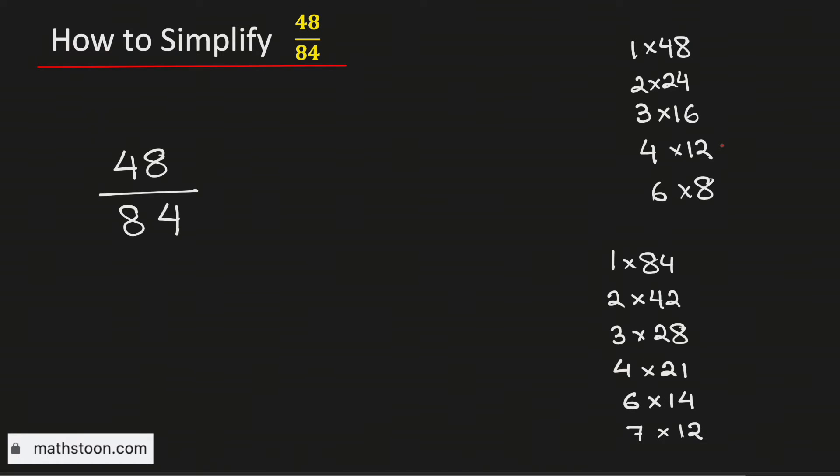See that among these numbers, 12 is the greatest one which is present in both these two lists. Therefore, 12 is the greatest common factor of 48 and 84.